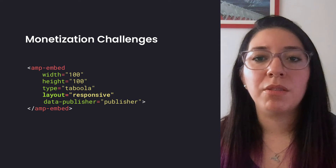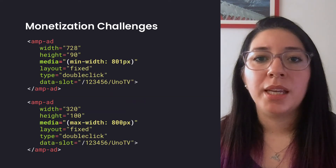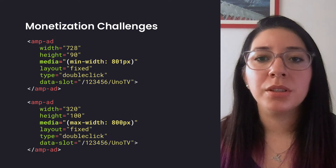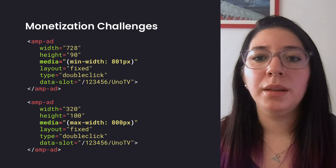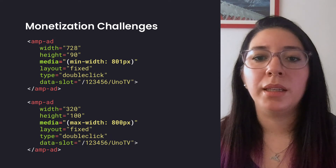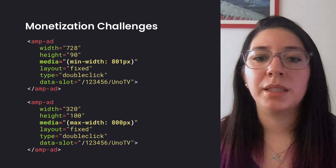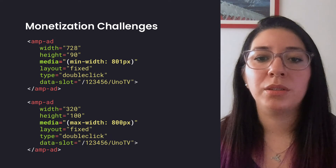Responsive ads: the responsive layout should only be used if the creative supports responsive ads, for example native ads like Taboola. If you intend to display different creatives for different screen resolutions, here's a trick that worked for us. We have a leaderboard banner — 728x90 on desktop, but on mobile it should be 320x100. To achieve this, we're using two AMP ads components with a media attribute. The desktop banner will only display if the screen width is 801 pixels or more, and the mobile banner will only display if the screen width is 800 pixels or less.